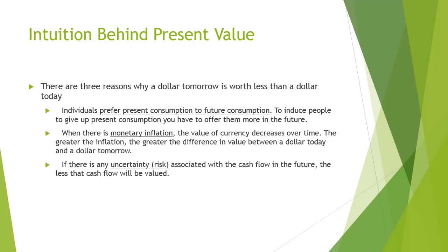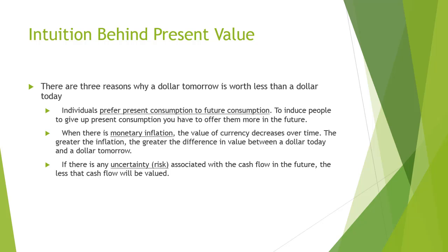The mechanism for factoring in these elements is the discount rate. The discount rate can be defined as a rate at which present and future cash flows are traded off. It incorporates three things. First is preference for current consumption. Because of preference for current consumption, if it is greater, the discount rate would be higher. Second is expected inflation.